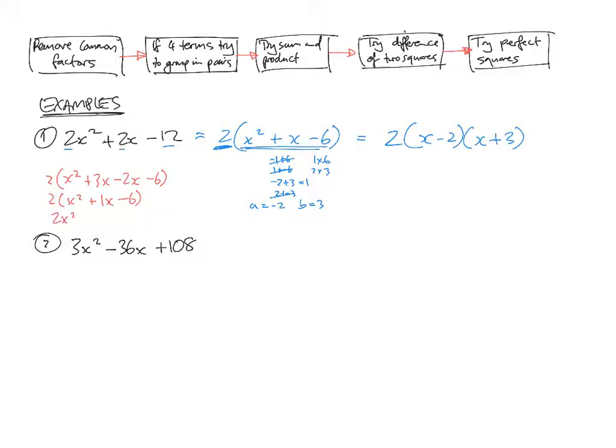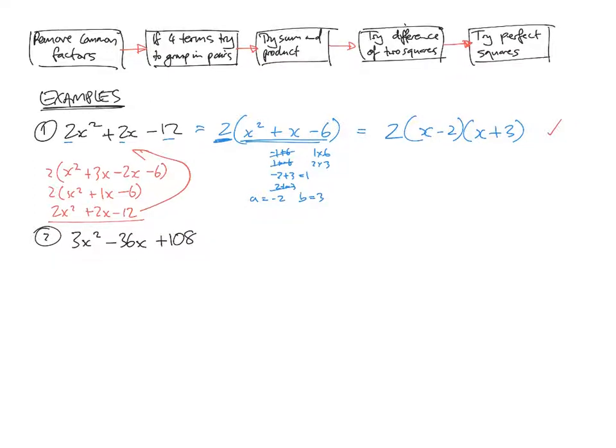2x squared plus 2x take 12. You can see that when I FOIL out my factorized answer, I get the original expression. So this is correct. Okay, so that's an application of the flowchart above.